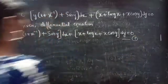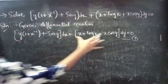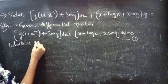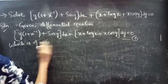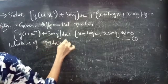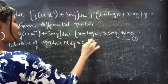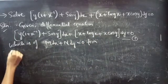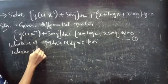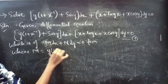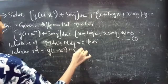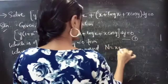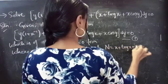Consider it as equation 1, which is of M dx plus N dy equals to 0 form. By comparing these two, we will get M equals to y into (1 plus x inverse plus sin y) and N equals to x plus log x plus x cos y.